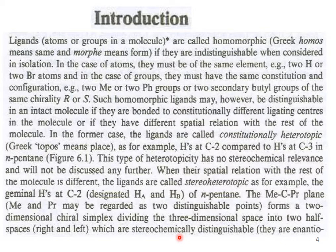When their spatial relationship with the rest of the molecule is different, the ligands are called stereoheterotopic — for example, the geminal protons at carbon 2, designated as proton Ha and proton Hb, of n-heptane. The methyl and propyl groups may be regarded as two distinguishable points dividing three-dimensional space into two half-spaces, right and left, which are stereochemically distinguishable. They are enantiotopic. We will discuss enantiotopic, heterotopic, homotopic, diastereotopic — many terminologies are included in our next lecture.